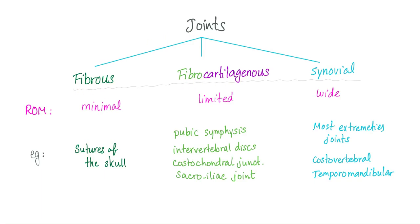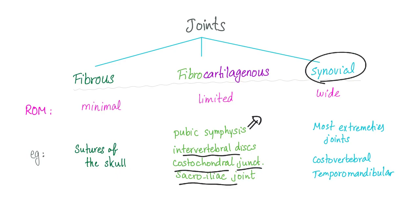There are three different types of joint: fibrous, fibrocartilaginous, and synovial. The fibrous joint has minimal range of motion, such as the sutures of your skull. The fibrocartilaginous joint has limited but more motion than fibrous, such as the pubic symphysis — which can widen during childbirth — the intervertebral disc, costochondral junction, and the sacroiliac joint. The synovial joint has the widest range of motion, such as most extremity joints, costo-vertebral joints, and the temporomandibular joint. Note that costo-vertebral joints are synovial, while costochondral junctions are fibrocartilaginous.